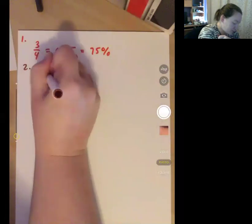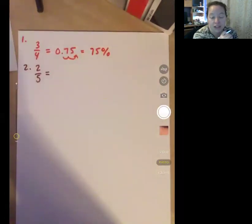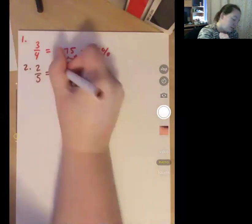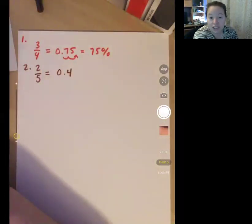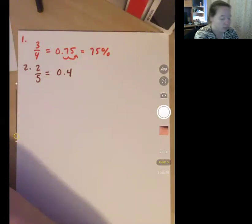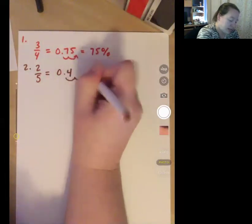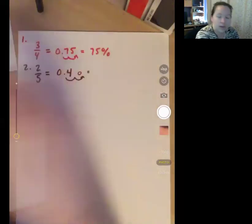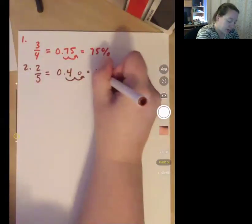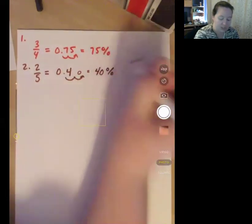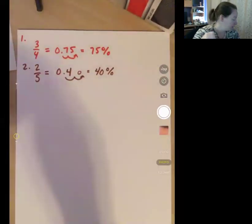Number two, two-fifths. If I plug that into my calculator, two divided by five, I end up with 0.4. Now I need to change this into a percent as well. I only have one number there, but I still move the decimal point two times. So the four-tenths ends up becoming 40%.